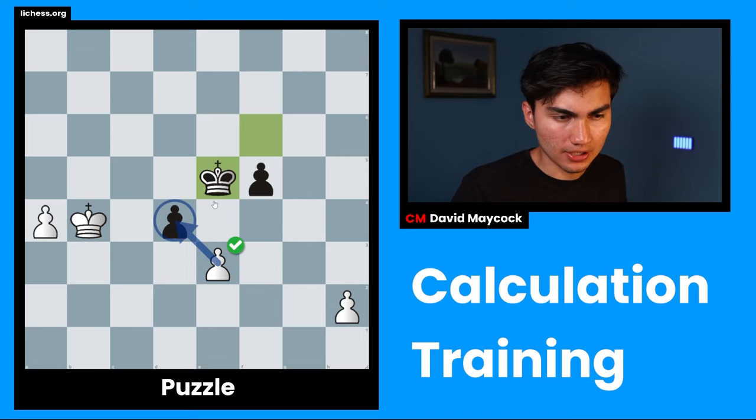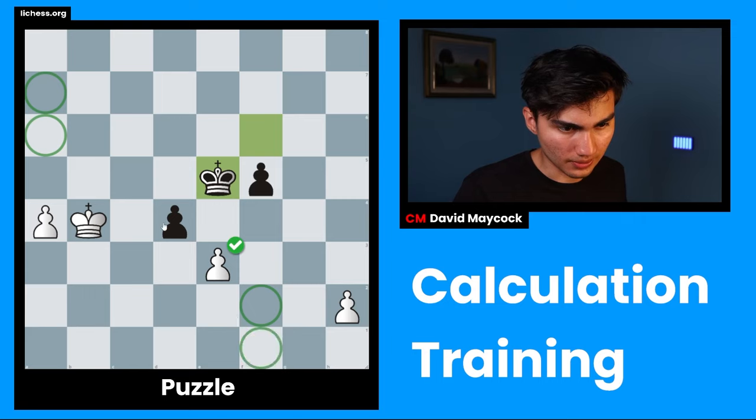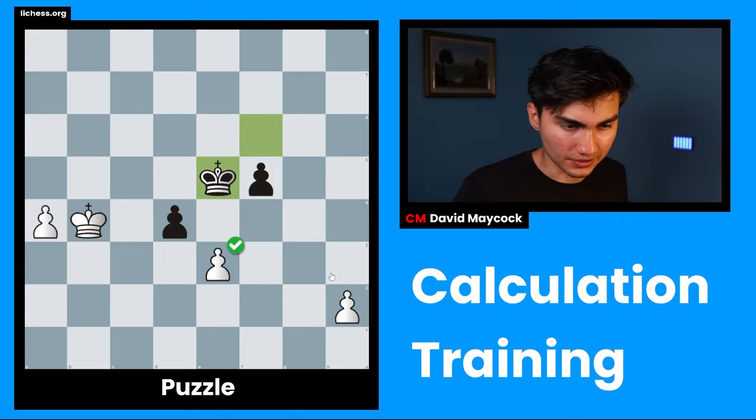Okay. No, wait. Sorry. E takes d4, king takes d4, king b3. If f4, I have king c2, king e3, a5, f3, a6, f2, a7, f1. Yeah, this is a draw. I'm actually, yeah, this is even more of a draw because black promotes first. Okay. So, e takes d4, I already, I'm already put off by that. So, it's not going to be e takes d4. It's going to be either a5 or king c4, which are my candidate moves for first.